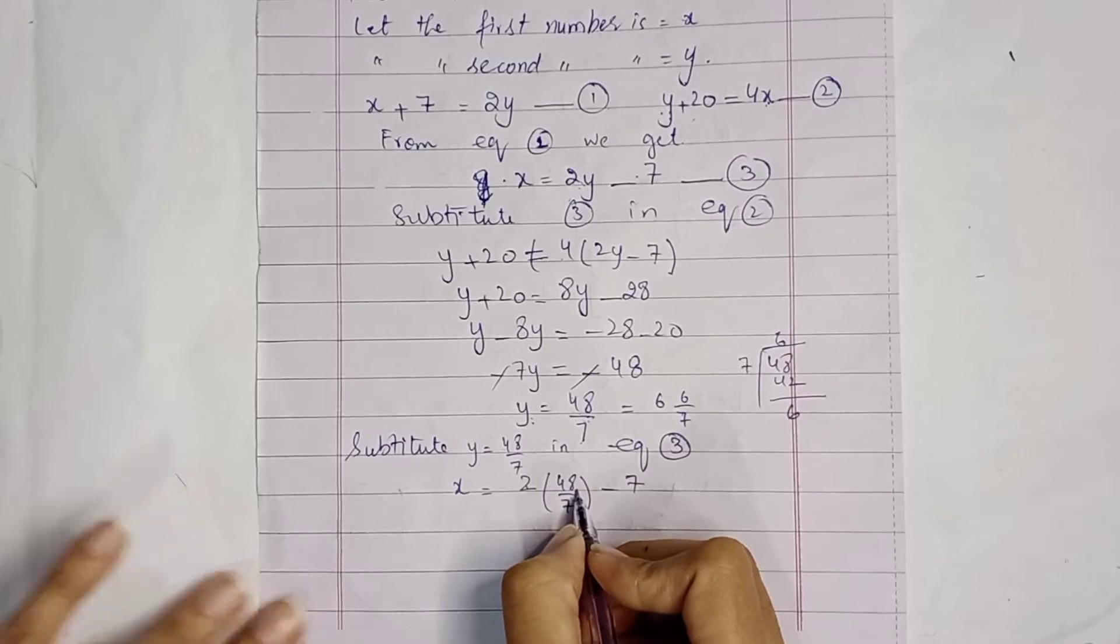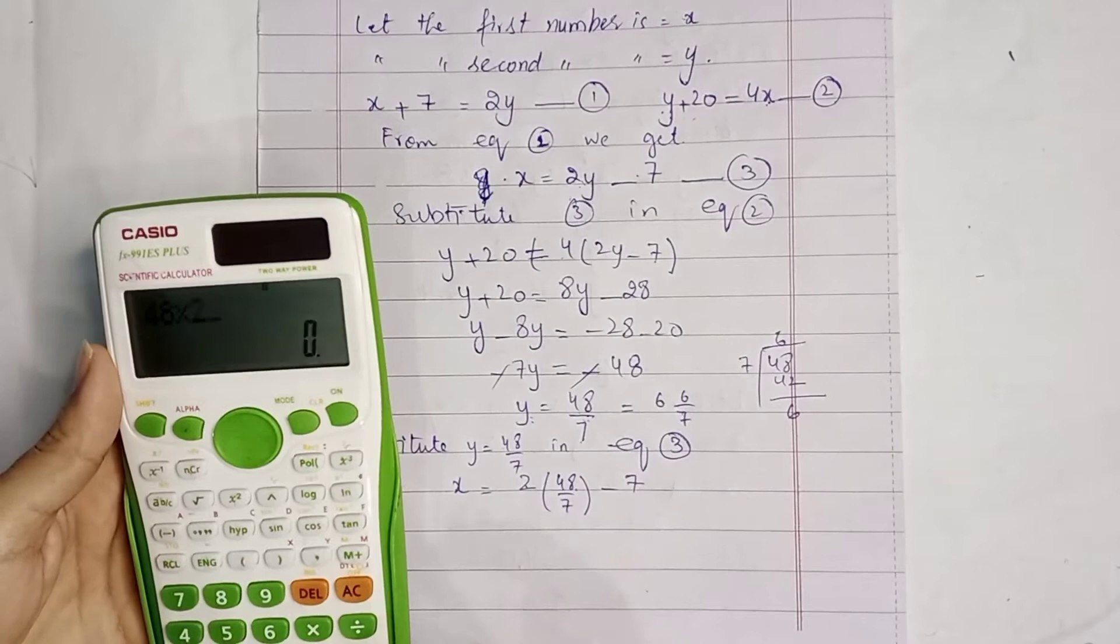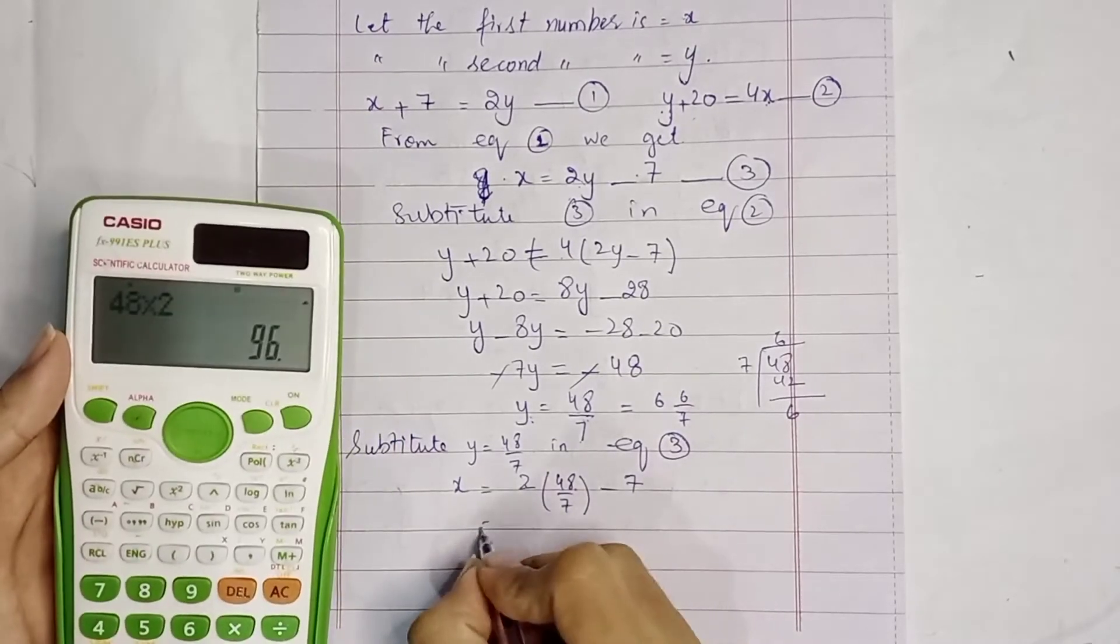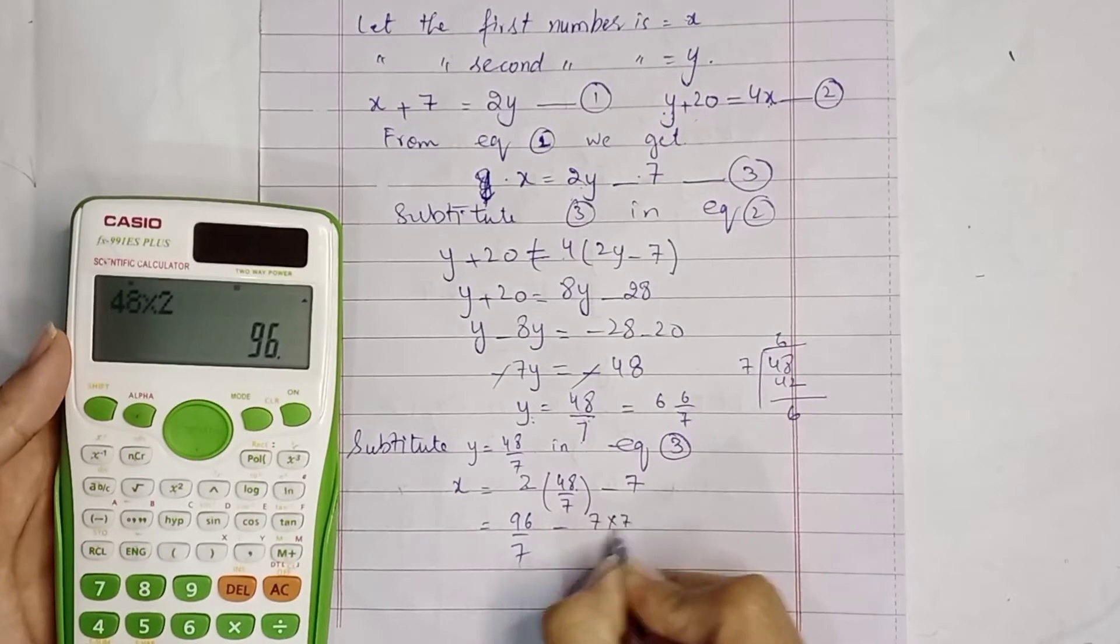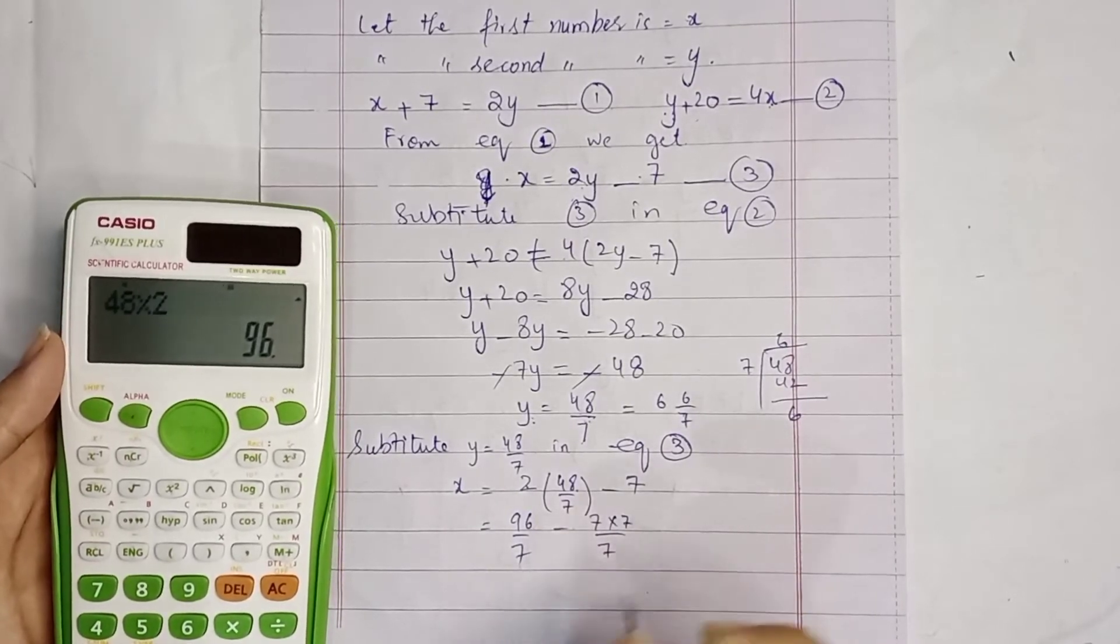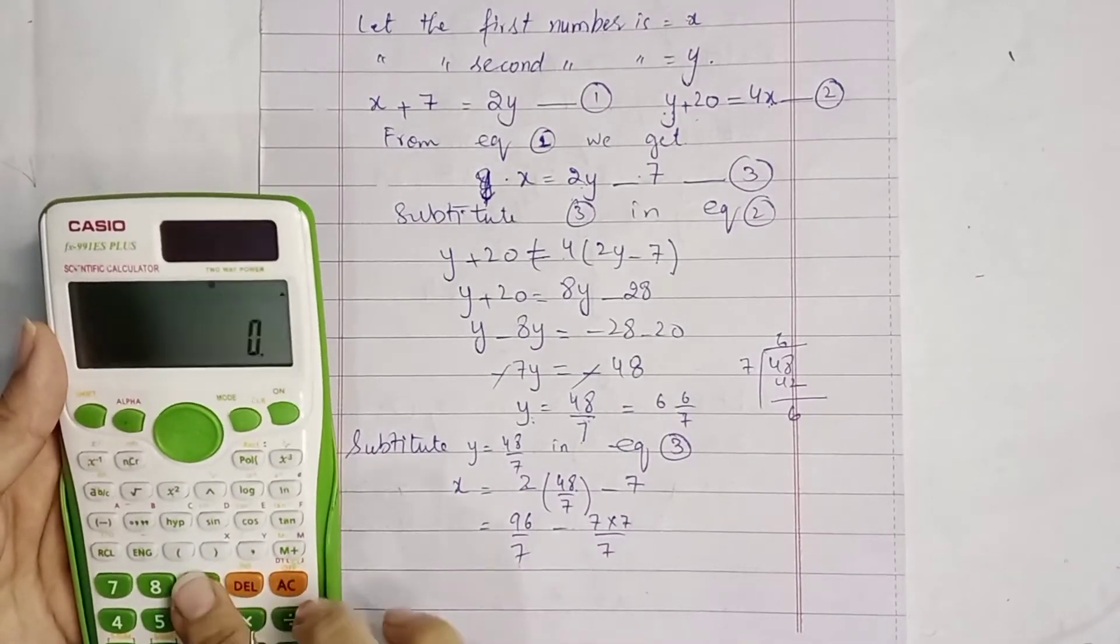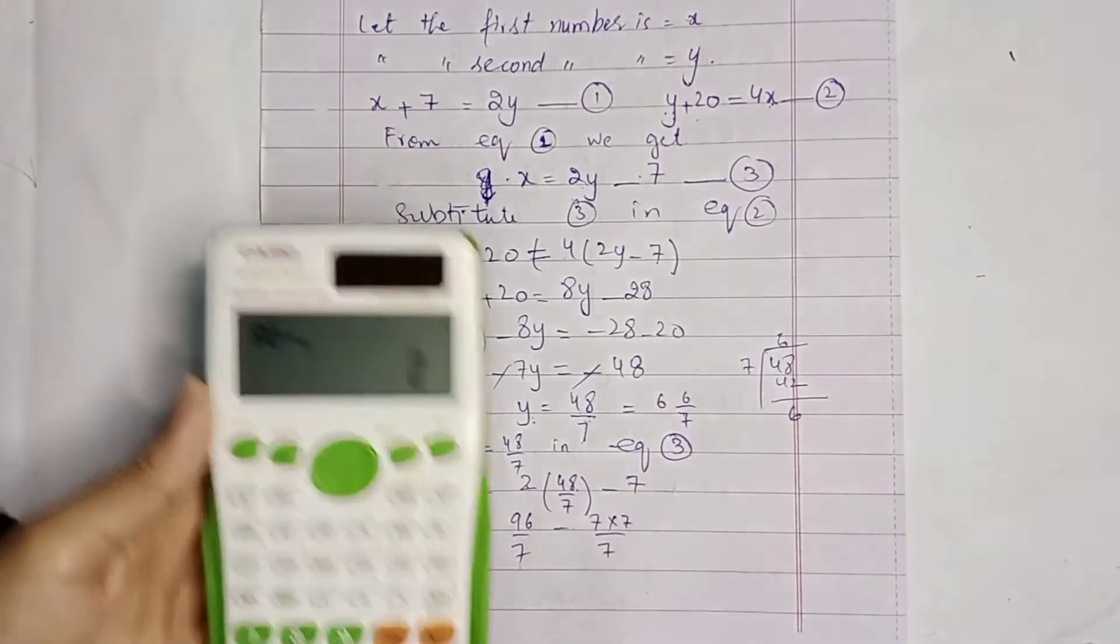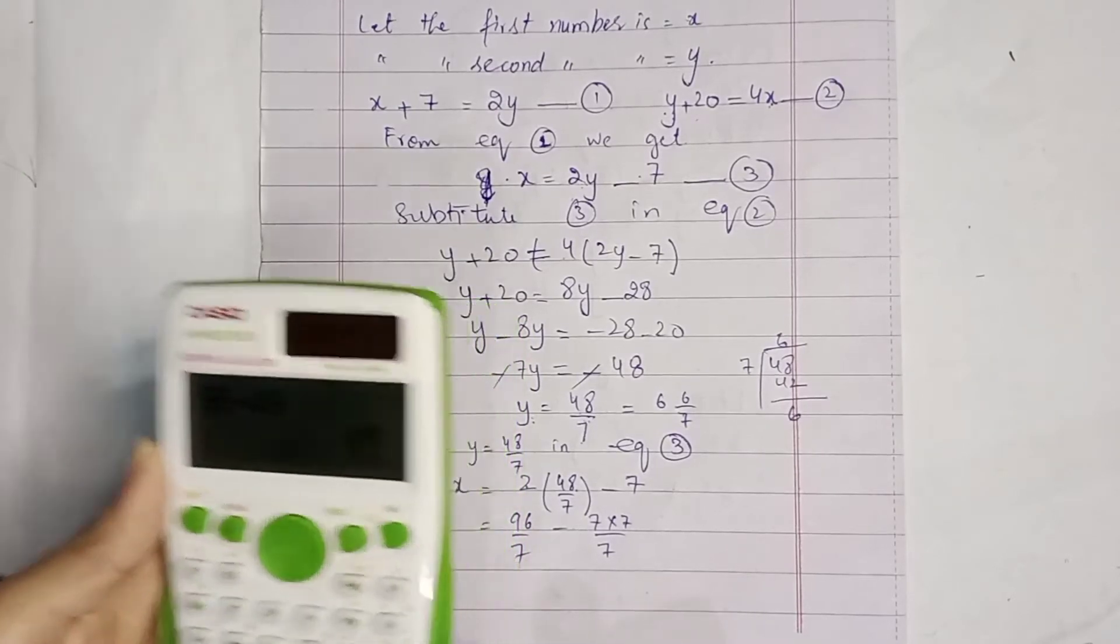Solving, 48 multiply by 2 we get 96 by 7 minus 49 over 7. 96 minus 49 we get 47 by 7, which equals 6 and 5 by 7.